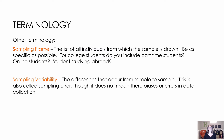Before we look at some of the methods, I want to cover terminology you might see or hear. The first is the sampling frame, which is essentially the list of all individuals from which the sample is drawn. That's not the actual people you've talked to, but the list of individuals from whom you could have chosen for the sample. It's important to be very specific about who will be included.